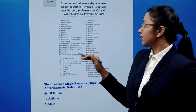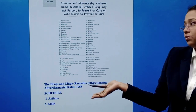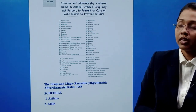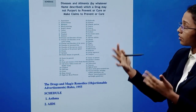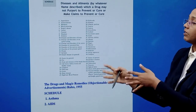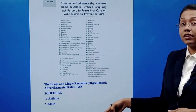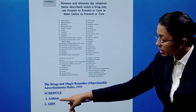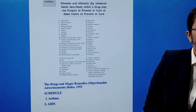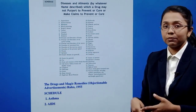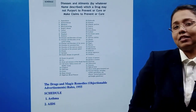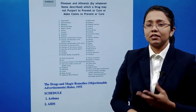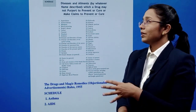The schedule of diseases includes conditions such as cancer, cataract, diabetes, epilepsy, hypertension, and leprosy — these are conditions for which drugs may not claim to prevent or cure. The schedule will also include AIDS. This is the Drug and Magic Remedies Act — a very simple act. If you want to know about the schedule and the penalties, that's all in this act.